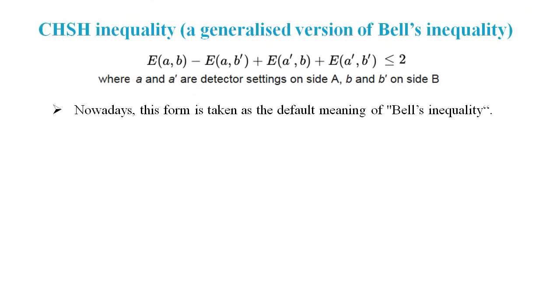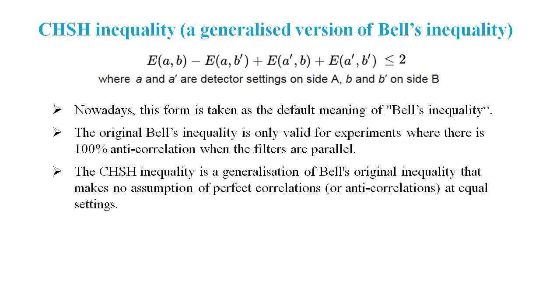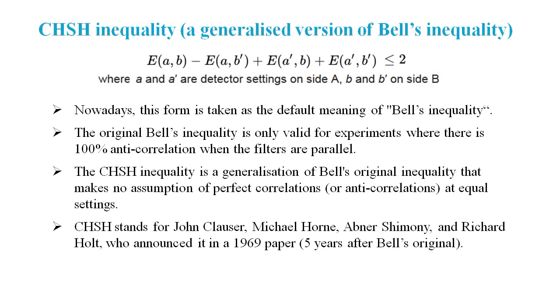When we talk about Bell's inequality, we usually mean this variation of it. The original Bell's inequality was valid for a property like polarization, but not valid for some other properties like spin. But this generalized version works for any property that we're measuring. Its proper name is a CHSH inequality, where the letters stand for the names of the people involved with its creation.